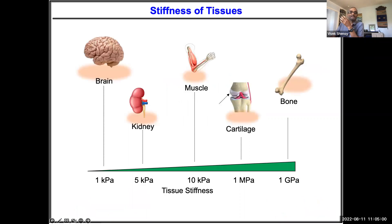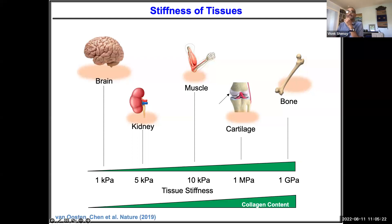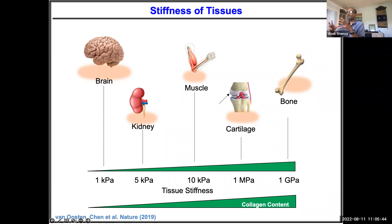Different organs have different stiffnesses — something like bone is like brick, while brain is like soft tofu. Tissues typically have cells, extracellular matrix, and fluid. Recently Paul Janmey and I looked at what contributes to stiffness. It turns out that a lot of the contribution comes from collagen. Bone has a lot of collagen; brain has less. So cells are seeing microenvironments that are very different when you go from one organ to another.